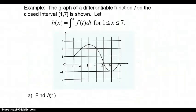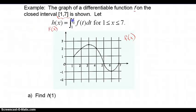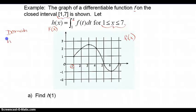Here is the first of two examples. The graph of a differentiable function f on the closed interval 1 to 7 is shown. Here is the graph of little f of x. And h of x — akin to our big F of x — is defined to be the area accumulating in the plane starting at x equal 1 and stopping at whatever x value they tell me, between this function and the horizontal axis. Since the upper limit is just x, the domain of h is the same closed interval from 1 to 7.